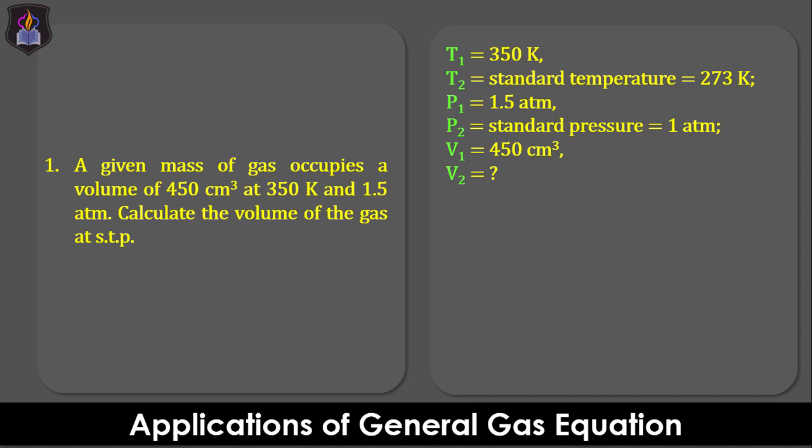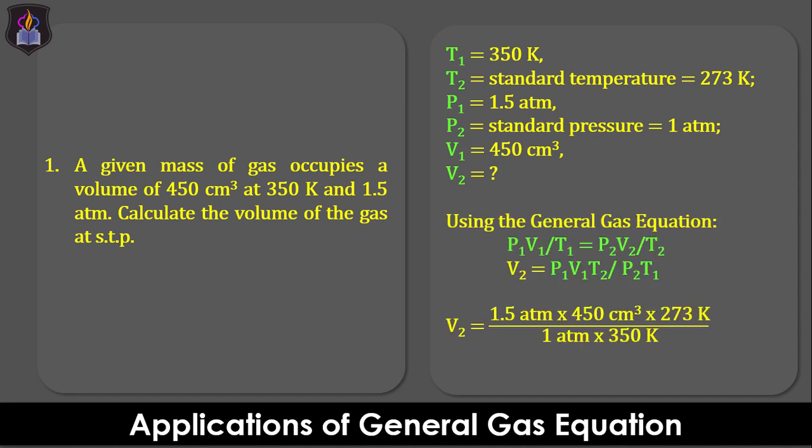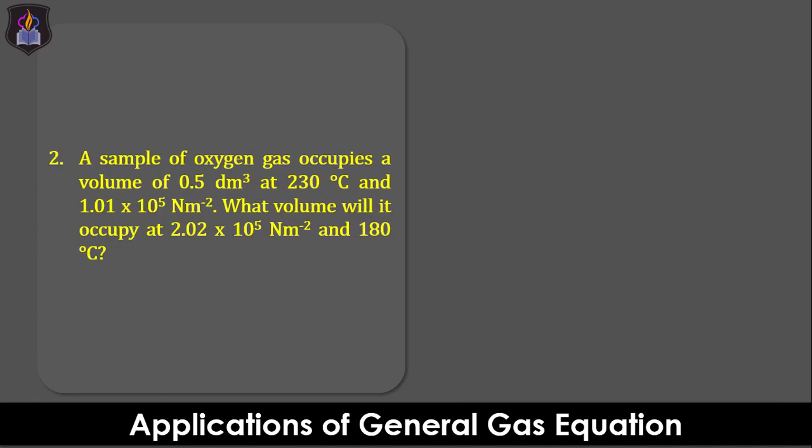Since the question involves changes in pressure, volume, and temperature of a gas at two different conditions, we'll apply the general gas equation: P1V1 over T1 equals P2V2 over T2, make V2 the subject of the formula, and then evaluate the equation to obtain 526.5 cm³ as the final volume of the gas.